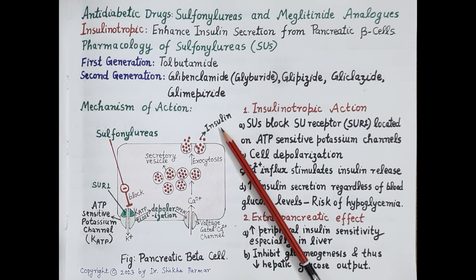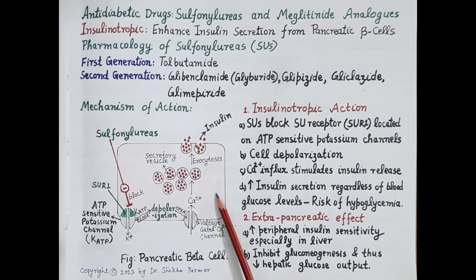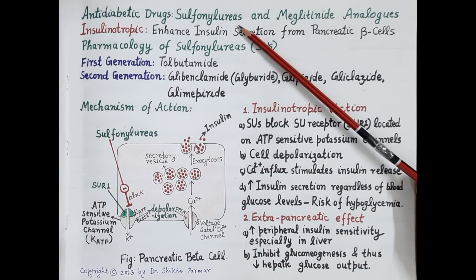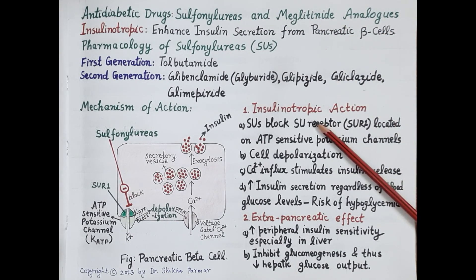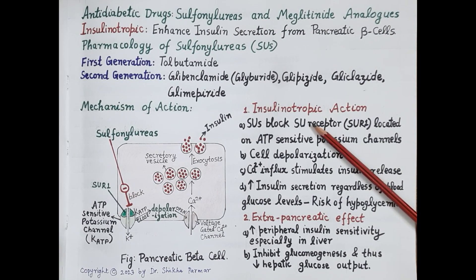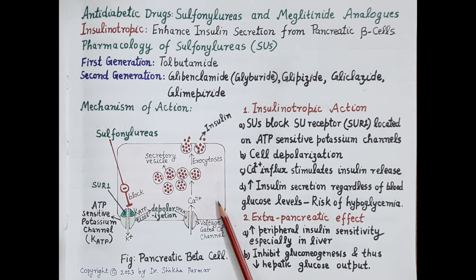Insulin is produced from beta cells of the pancreas. Sulfonylureas and meglutinide analogs are insulinotropic agents. These drugs stimulate and thus enhance secretion of insulin from pancreatic beta cells, and this improves transportation of glucose from the blood into the body cells.